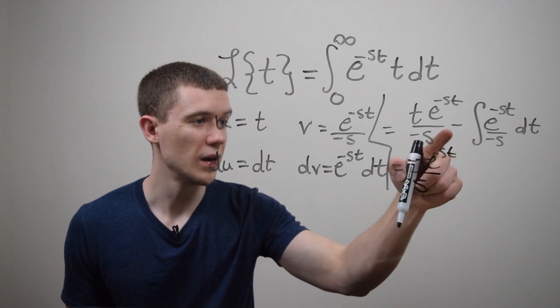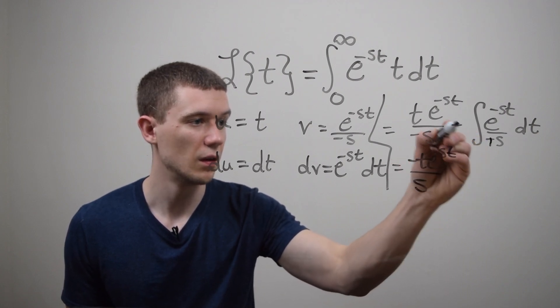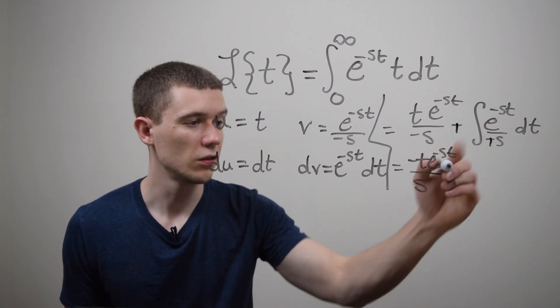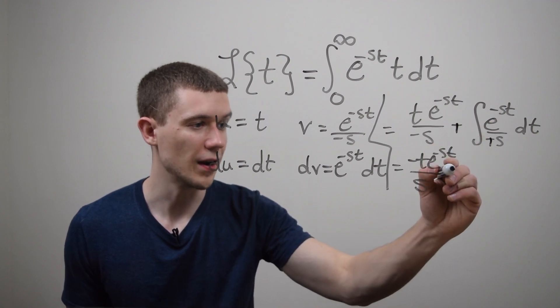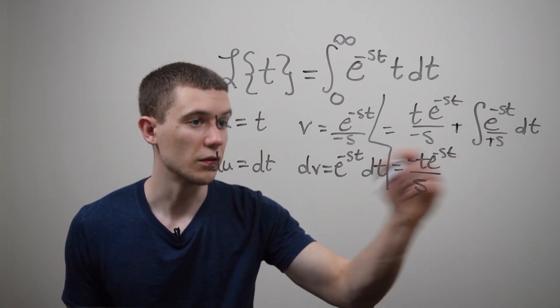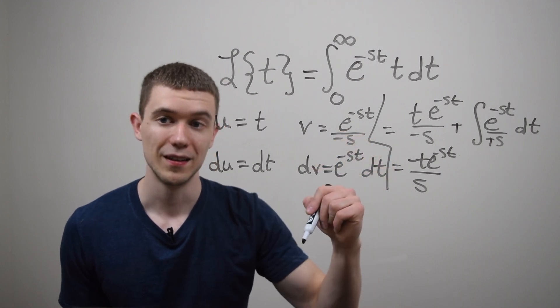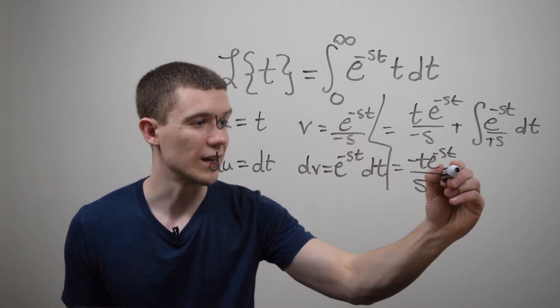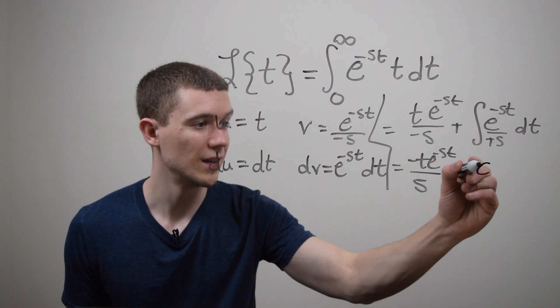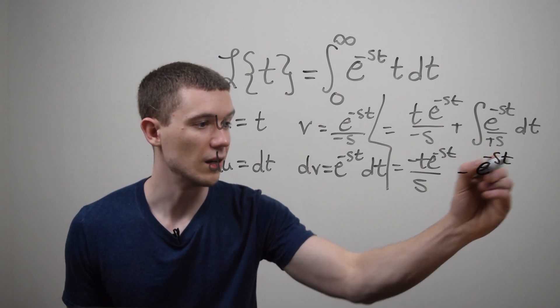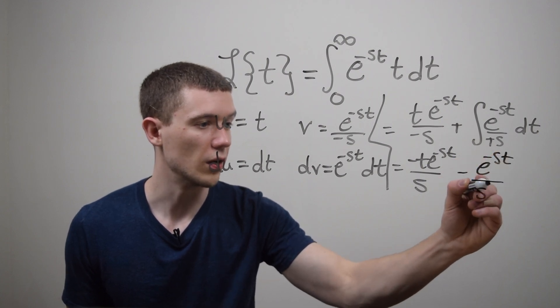Here minus a minus is going to be a plus and when I integrate e to the minus st over s it's going to be another minus over s just like it was last time. So this will actually be minus e to the minus st over s squared.